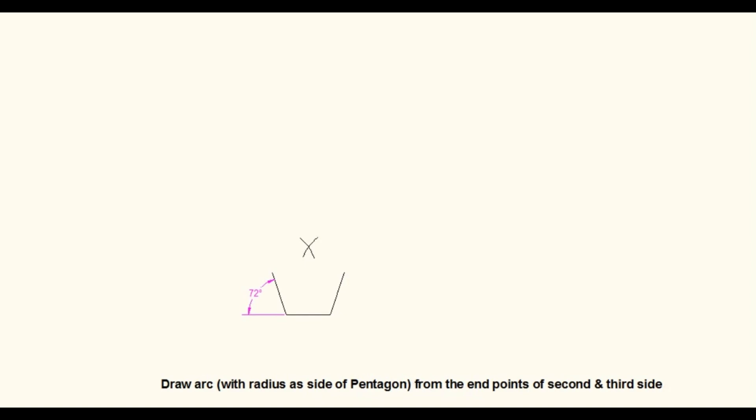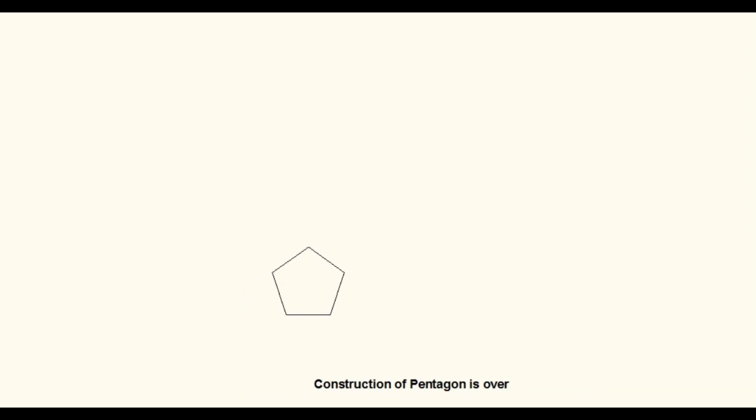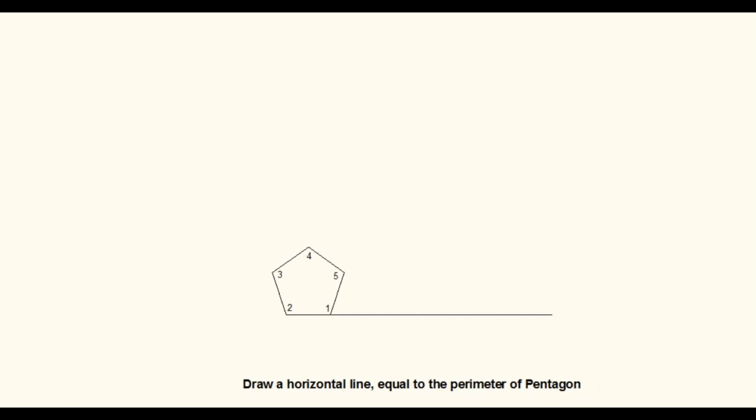These arcs will intersect. Join this intersection point with the end points of the previously drawn edges. Thus the pentagon construction is over. Mark numbers on the corners of the pentagon. Draw a horizontal line from the first corner of the pentagon. The length of the line is equal to the perimeter of the pentagon. One side of the pentagon is 30 mm and the pentagon has 5 sides. Therefore the perimeter is 30 times 5 equals 150 mm. Divide this horizontal line into 5 equal divisions and mark numbers on the divisional points.